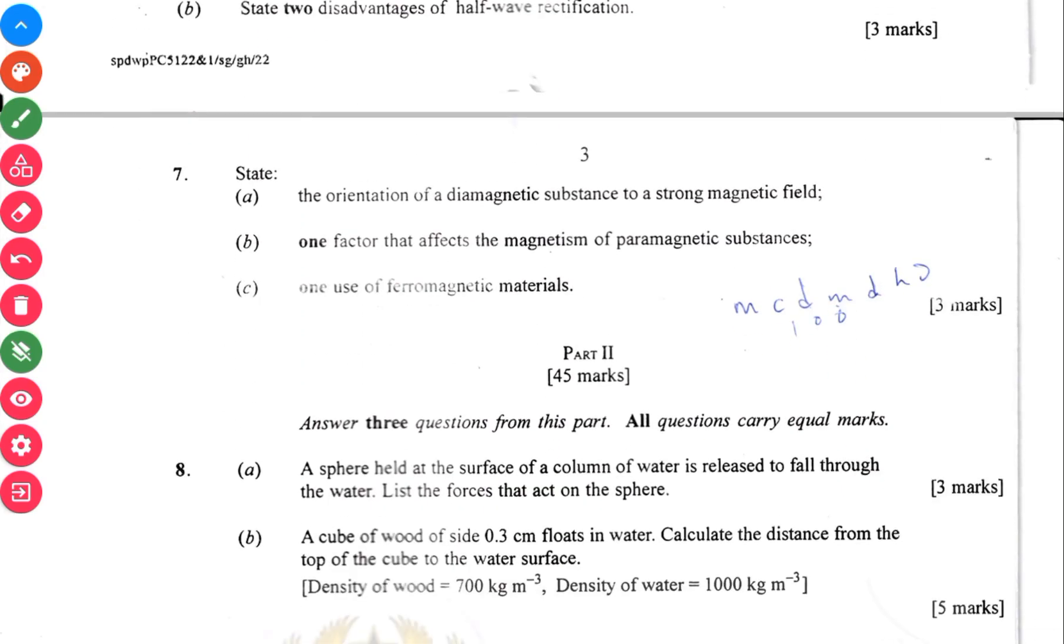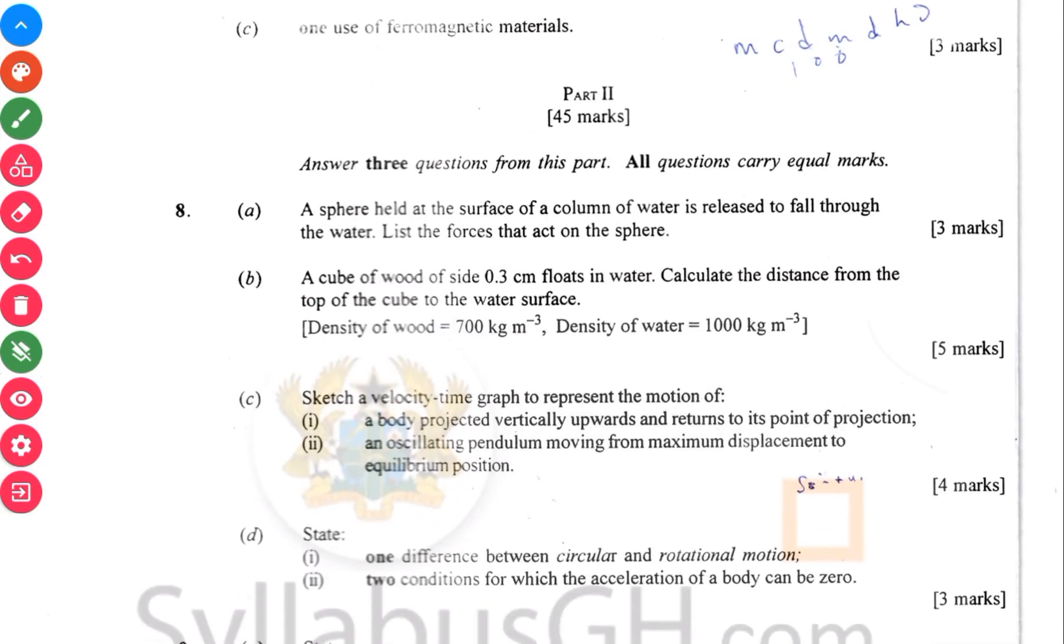Question 7 has to do with magnetism. The orientation of a diamagnetic substance to a strong magnetic field, factors that affect magnetism, paramagnetic substances, and one use of ferromagnetic materials. So we are done with the compulsory parts and we are looking at the optional.